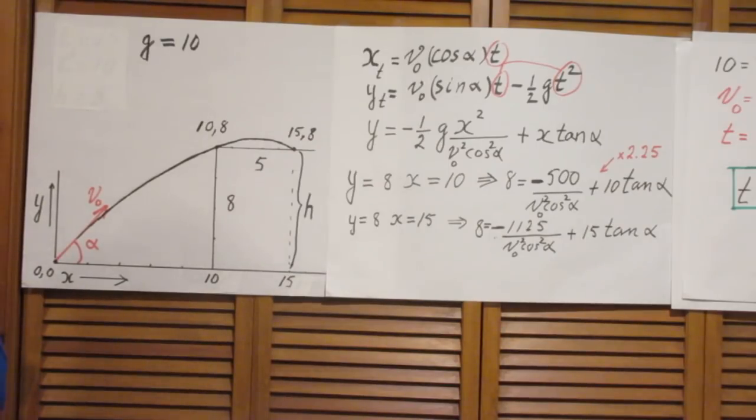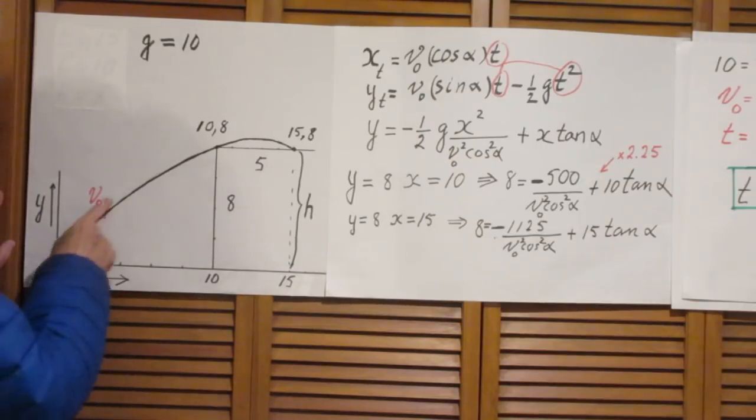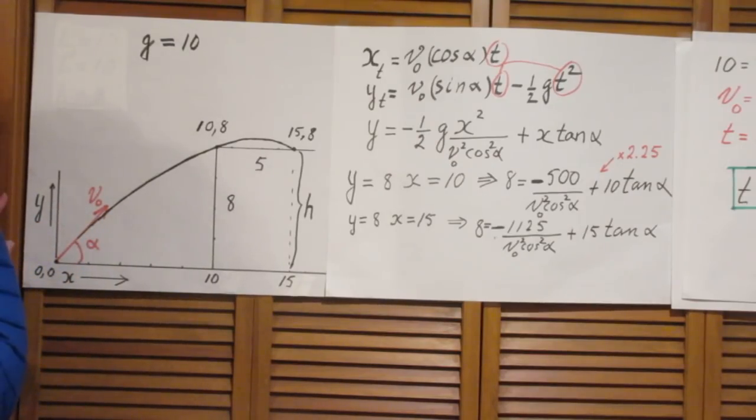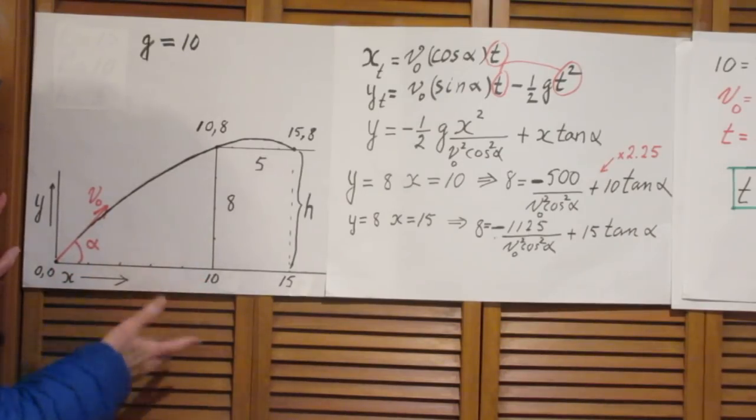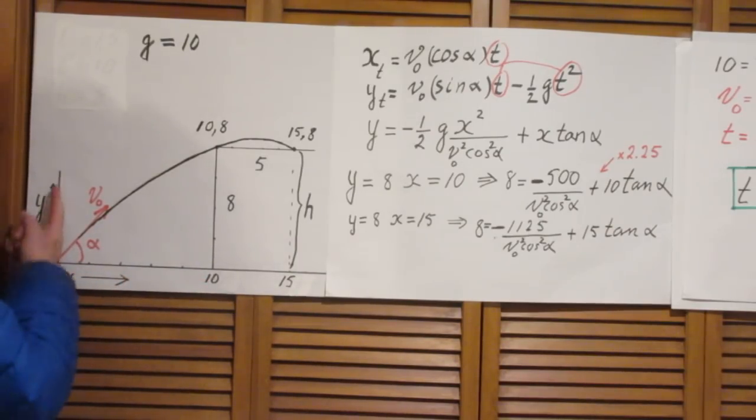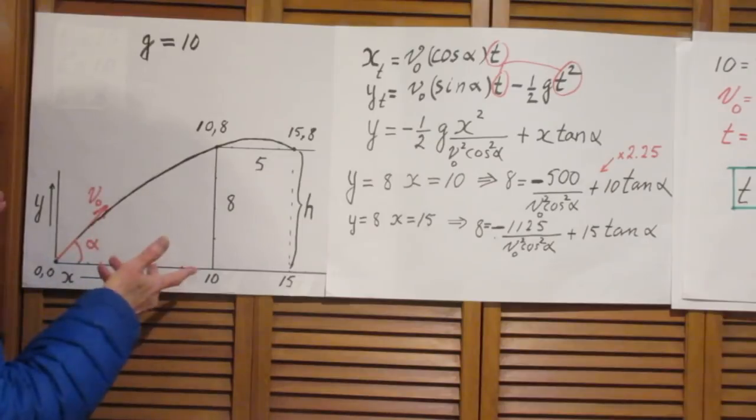So how am I going to do this? I'm going to shoot it off at an angle alpha with a speed V0. The horizontal component of the speed is then V0 cosine alpha which never changes because there is no acceleration in the x-direction. But in the y-direction the speed at T0 is V0 sin alpha but it will change in time.